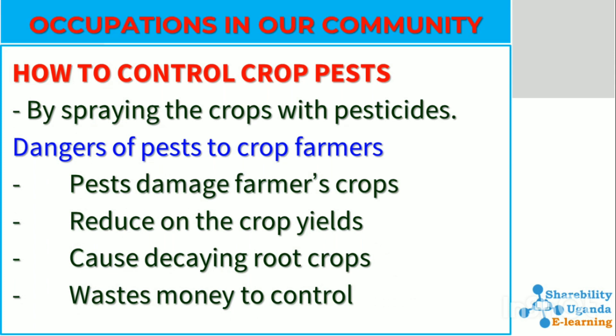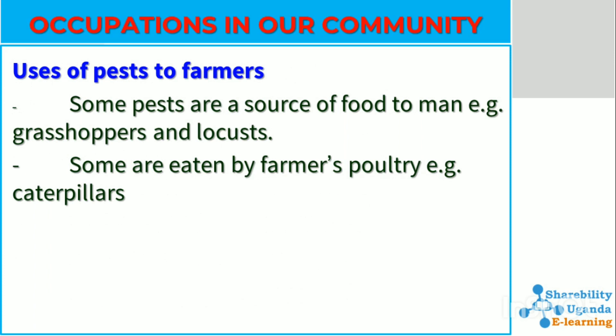How do we control pests in our gardens? By spraying the crops with pesticides and insecticides. Pests are dangerous to crop farmers — they damage farmers' crops, reduce crop yields, and also cause decaying in root crops. However, some pests can be of certain importance to farmers: some are a source of food, such as locusts and nsenene, and others like caterpillars are eaten by farmers' poultry such as chickens and birds.